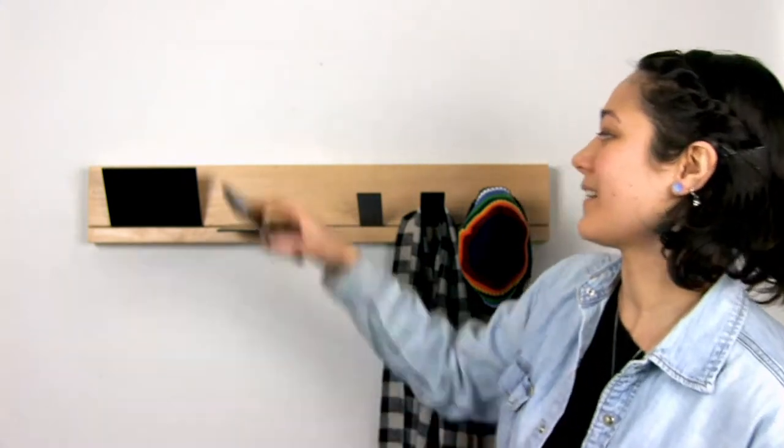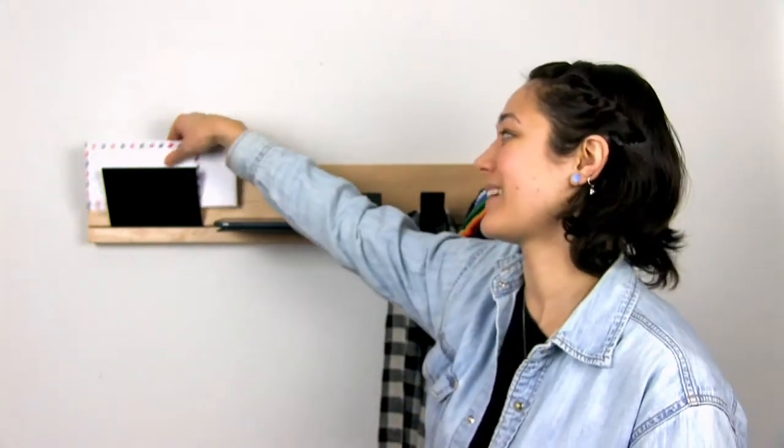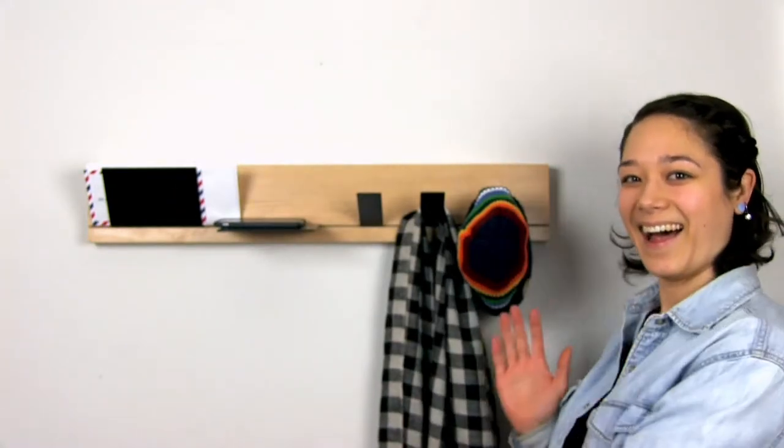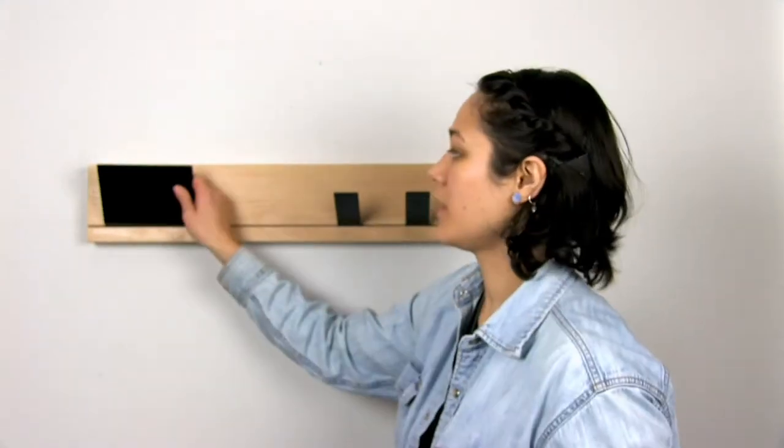You can put mail in the mail holder. It comes in two different sets: one with three hooks and two shelves, or you can get one with six hooks. Or you can buy the pieces individually to mix and match.